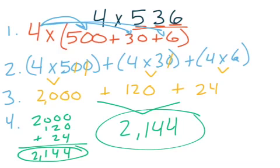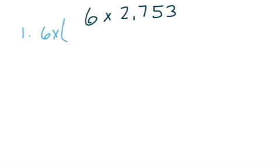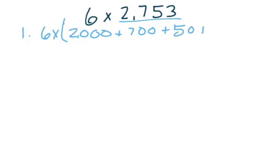Let's take a look at one more problem. Remember, it's super important that you follow all four of your steps. Here's our second problem: six times two thousand, seven hundred fifty-three. Step number one told us we have to expand. So we're going to expand our number two thousand, seven hundred fifty-three. When we expand it, we get two thousand plus seven hundred plus fifty plus three.